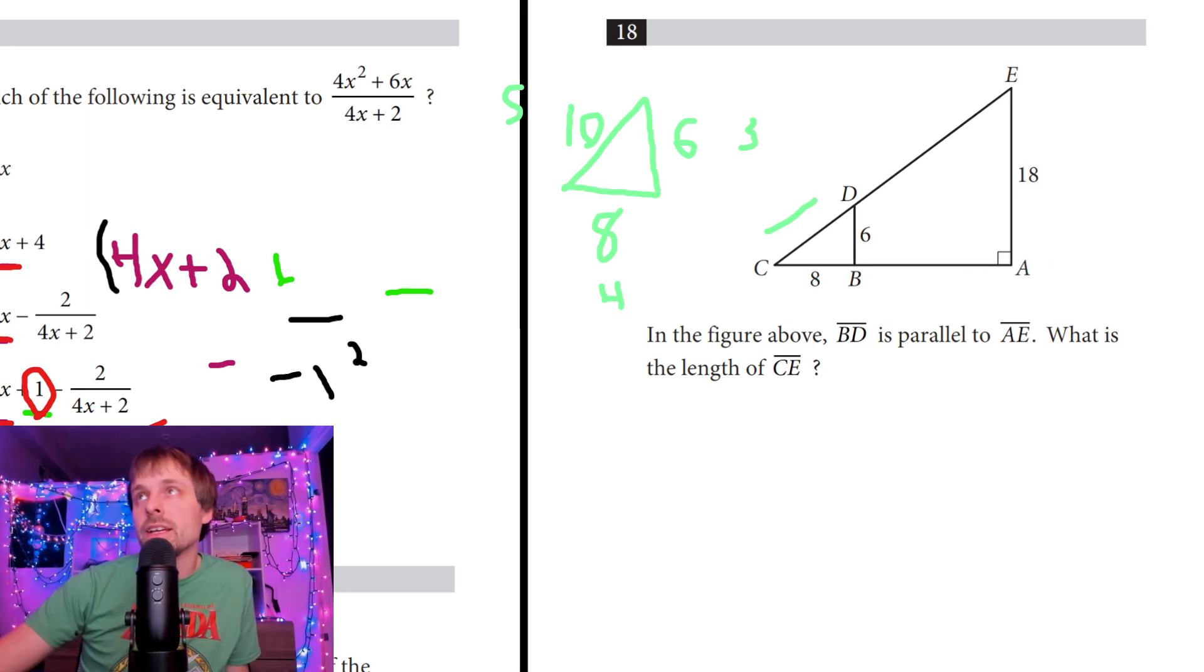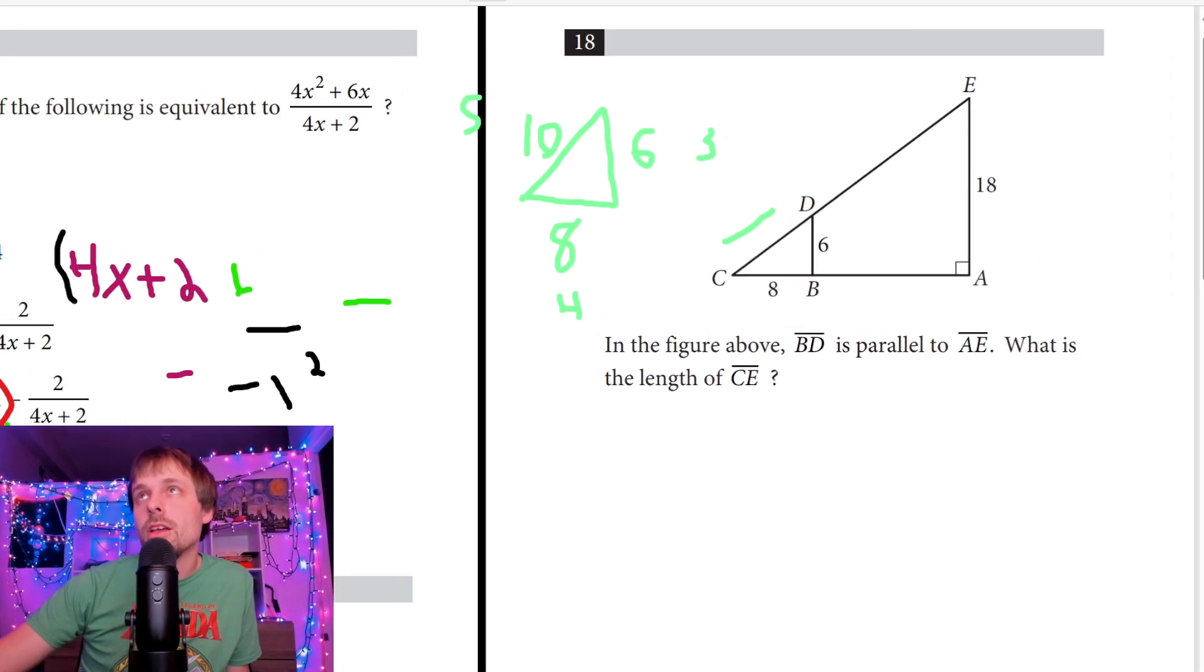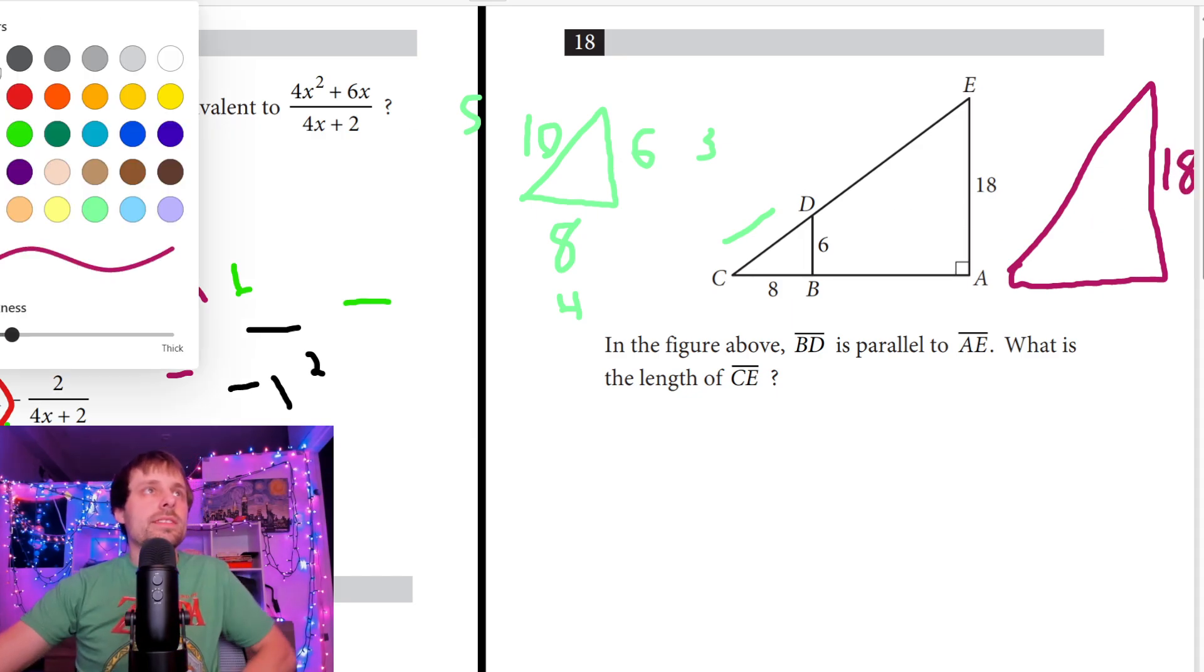And then I draw my bigger triangle. It's going to be a little hard to squeeze in over here. Let me see if I can get a little bit more space. Right there. So bigger triangle here. This is just going to be straight from C to E to A. So I have 18 so far. Let's see what other information they give me here. BD is parallel to AE. What is the length of CE? So this one's actually not too bad. I think the last one we had to solve for using tangent.